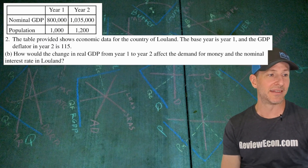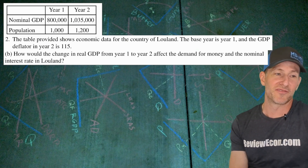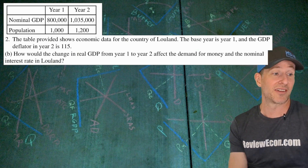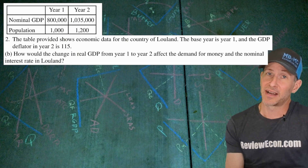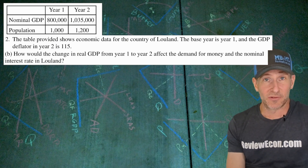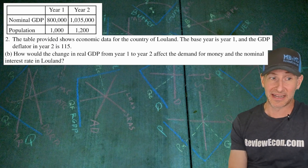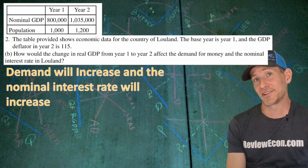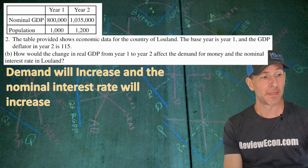On to part B. How would the change in real GDP from year one to year two affect the demand for money and the nominal interest rate in Luland? This is the money market graph. The demand for money reflects transaction demand and asset demand. When real GDP increases, that is going to increase the transaction demand for money — shifting it to the right — and that's going to increase the nominal interest rate in the money market.